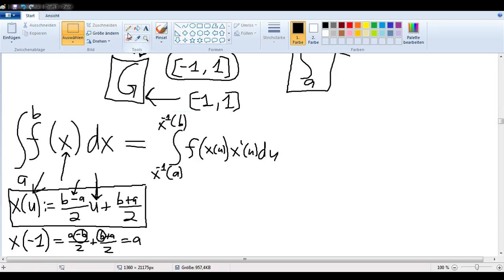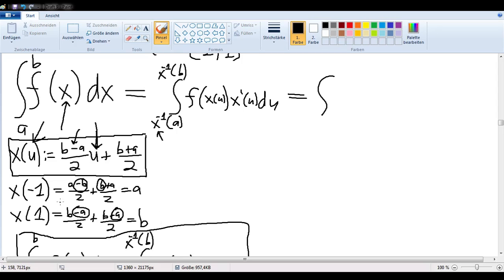Now we can plug in for our variables. What is x to the negative 1 of a? Well, x to the negative 1 of a just means what value do we have to put into x in order to get a? And we saw before that that was negative 1. And x to the negative 1 of b just means what do we have to put into the function x in order to get the value b? We saw that that was 1. So we've got the interval that we wanted to have.